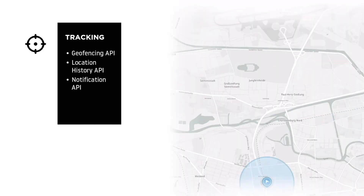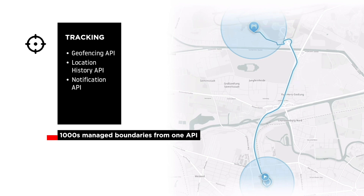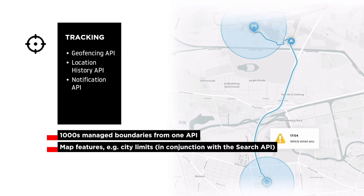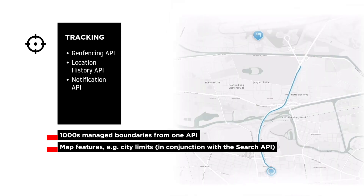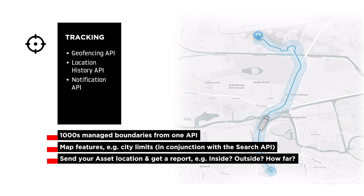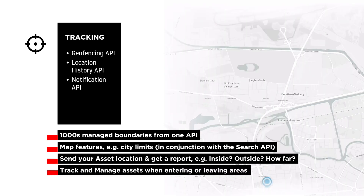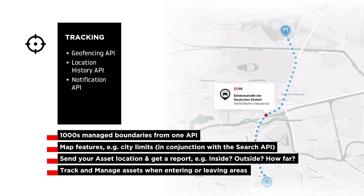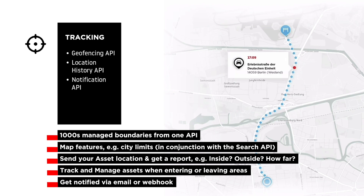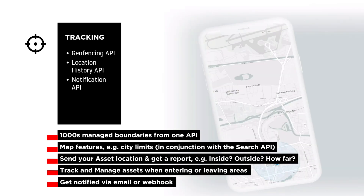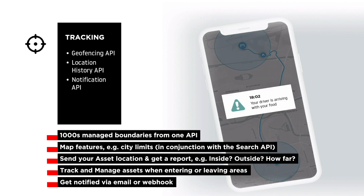With the Tracking family, you can create and manage thousands of virtual boundaries from one central location. Use map features like airport grounds or city limits to define geometric areas and create geofences. You can then submit the location of your asset and get a report — was it inside, how far or close from the fence, and so on. With the Location History API, you can manage and control the whereabouts of your assets securely in the cloud. And with the Notifications API, you can get alerts when assets move in or out of areas, and how long they've been in certain locations — sent to emails or webhooks to your backend.